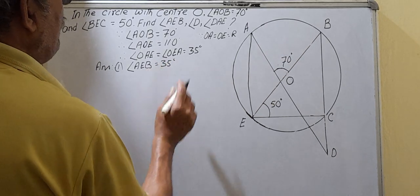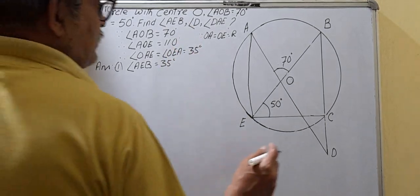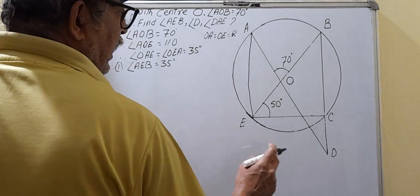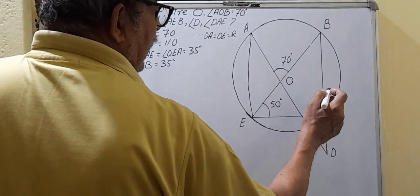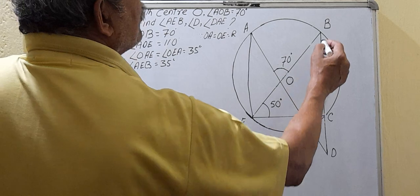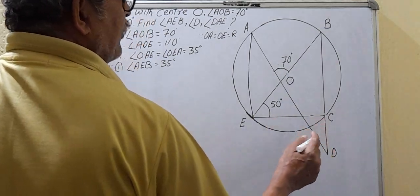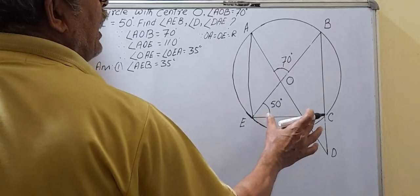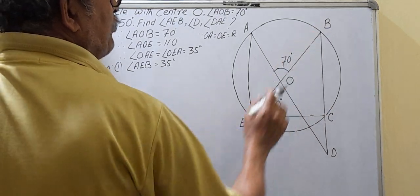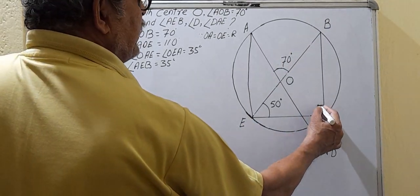Now for angle DCE: O is the center, and BC and EC are both joined to diameter points. Since BE is a diameter, angle BCE = 90 degrees.